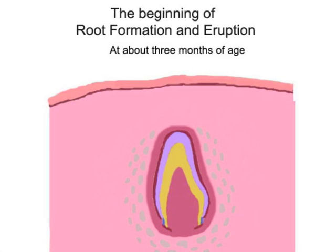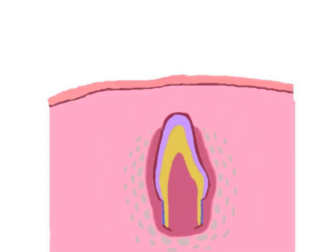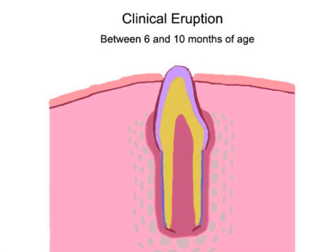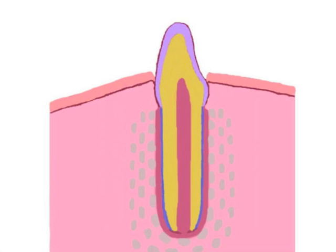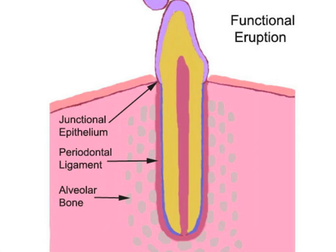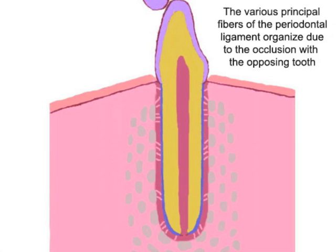From this point, tooth formation continues as the tooth erupts. Once eruption has completed, the tooth will become functional, completing its root end and the alignment of the periodontal ligament fibers with its alveolar bone.